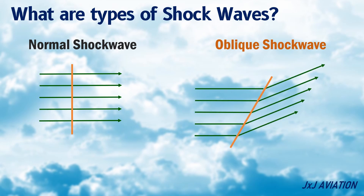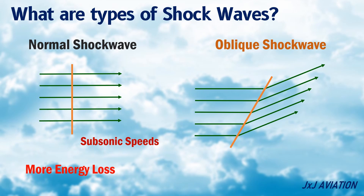Downstream of a normal shockwave, the flow always decelerates to subsonic speeds, resulting in more energy loss. After an oblique shockwave, the airflow decelerates but does not reduce to subsonic speeds.